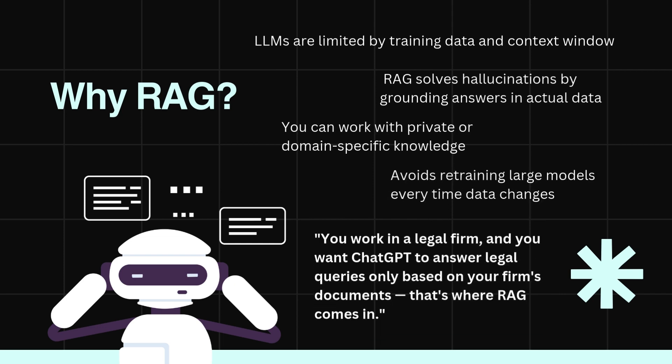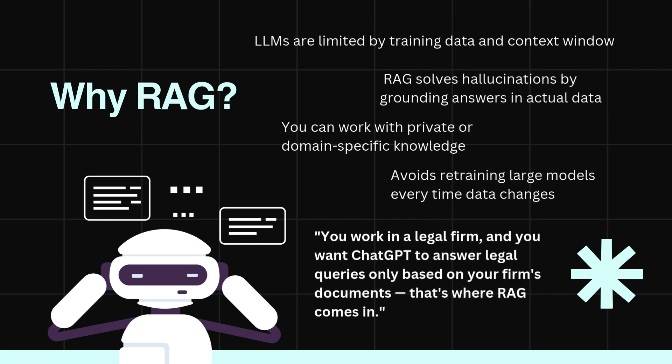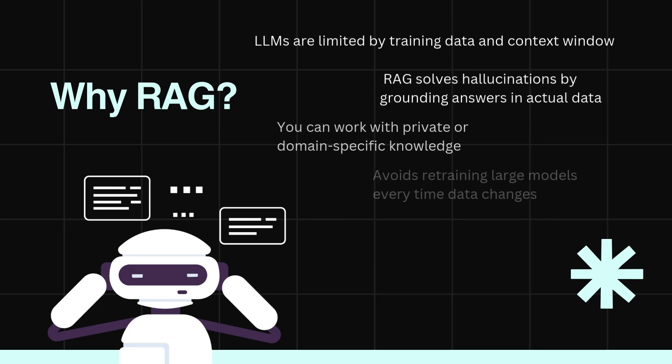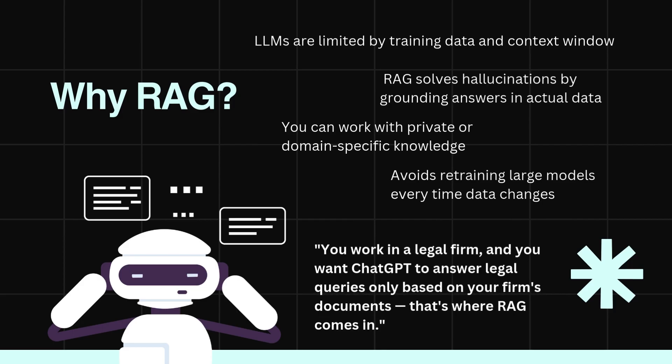LLMs are limited by training data and context window. RAG solves hallucinations by grounding answers in actual data. You can work with private or domain-specific knowledge, and it avoids retraining large models every time data changes. For example, if you work in a legal firm and want ChatGPT to answer legal queries only based on your firm's documents, that's where RAG comes in.